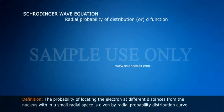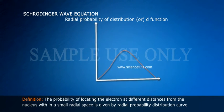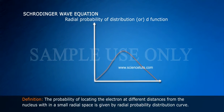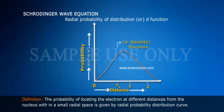Radial probability distribution or D-function. Definition: The probability of locating the electron at different distances from the nucleus within a small radial space is given by Radial probability distribution curve.